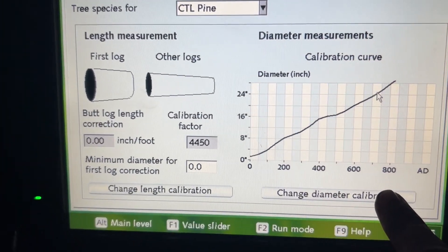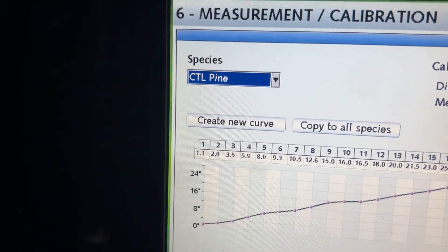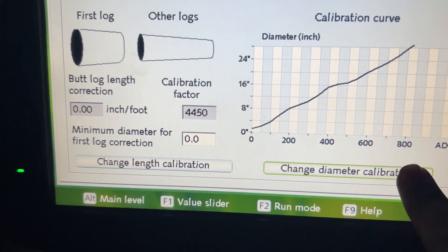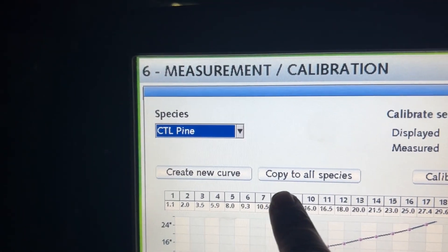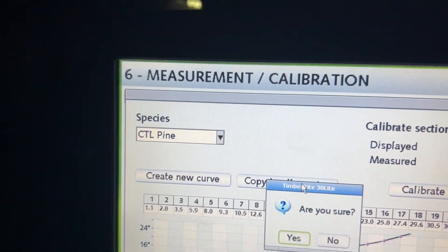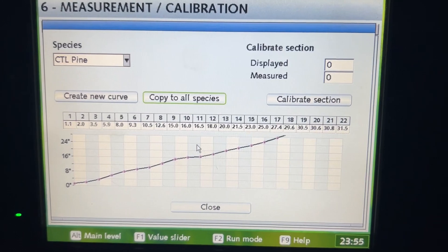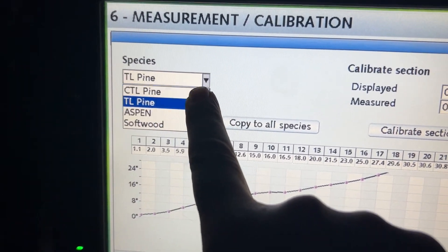So you are going to select the change diameter calibration. This will bring you to this screen here. I am going to make sure that my graph is saved. Just make sure. Yes, perfect.